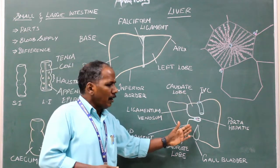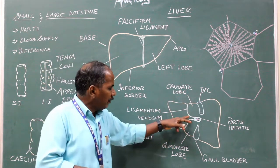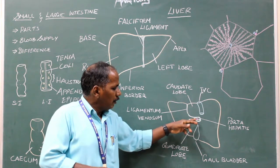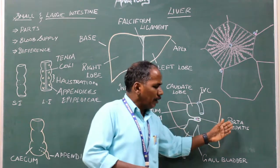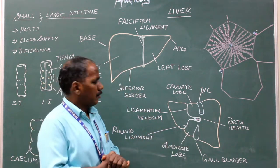The caudate lobe and quadrate lobe are separated by a fissure or a gap known as hilum of liver or porta hepatis.